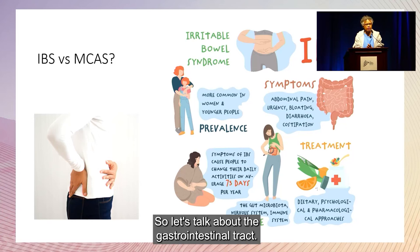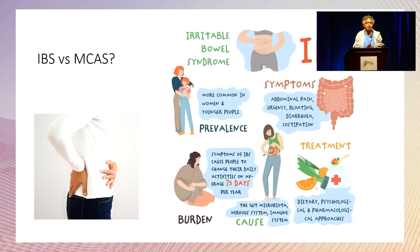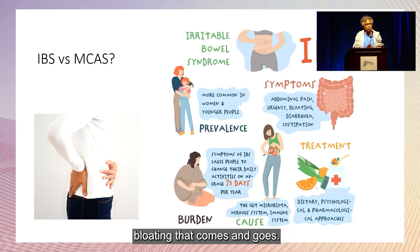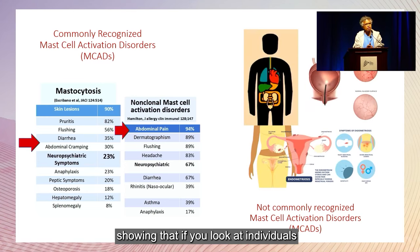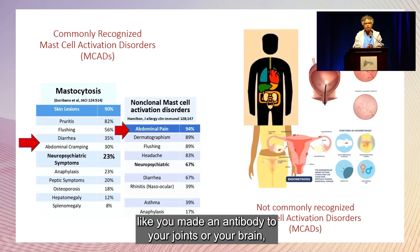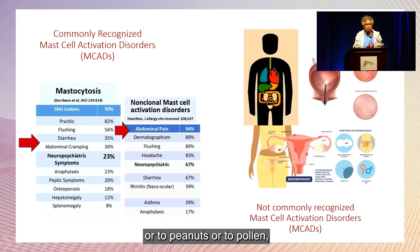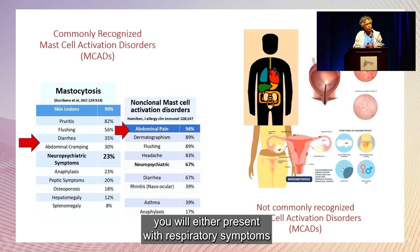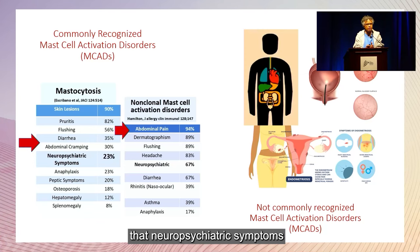Irritable bowel syndrome basically means your endoscopy and colonoscopy looks normal, but you're having diarrhea that comes and goes, bloating, poor absorption, or heartburn and reflux — very prevalent. Individuals with mastocytosis, or those whose mast cells are misbehaving because of antibodies against joints, the brain, thyroid, peanuts, or pollen, will present with respiratory, gastrointestinal, or skin symptoms. Neuropsychiatric symptoms are actually quite common as well.